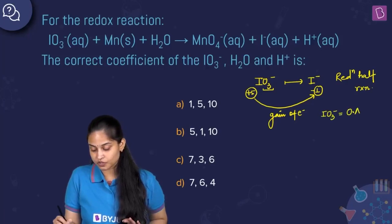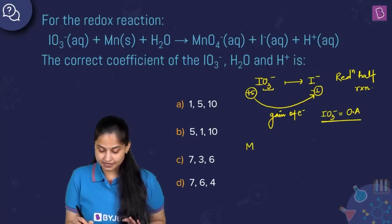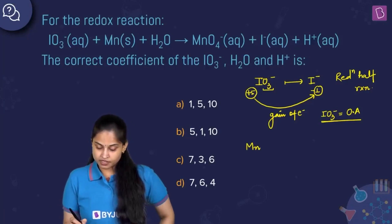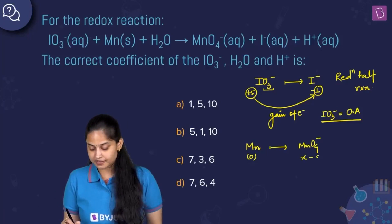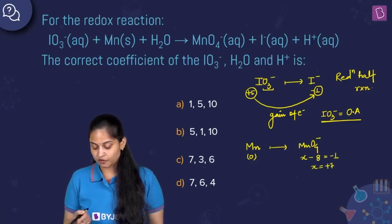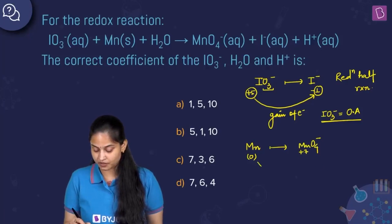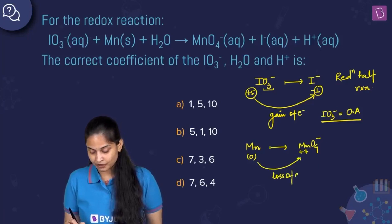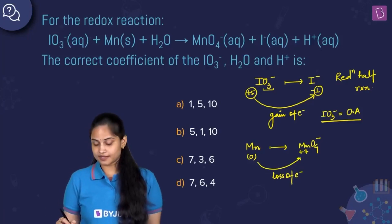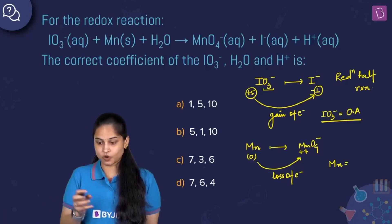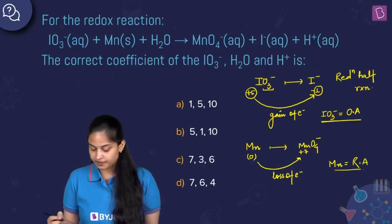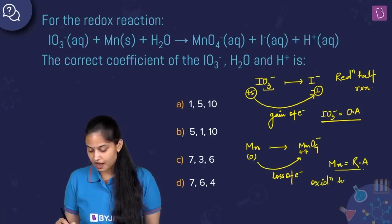Since it is the reduction half reaction, the iodate ion IO₃⁻ is the oxidizing agent — it oxidizes the other species and itself gets reduced. For manganese, it changes from Mn (solid, zero oxidation state) to MnO₄⁻. In MnO₄⁻: x minus 8 equals minus 1, so x equals +7. Manganese goes from 0 to +7 — loss of electrons occurs, making Mn the reducing agent. This is the oxidation half reaction.